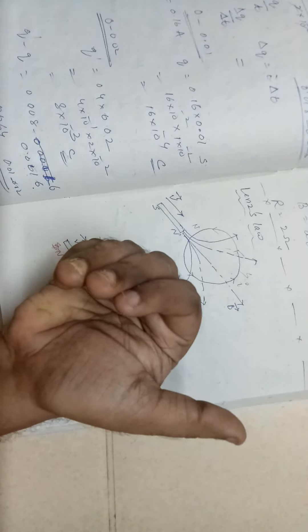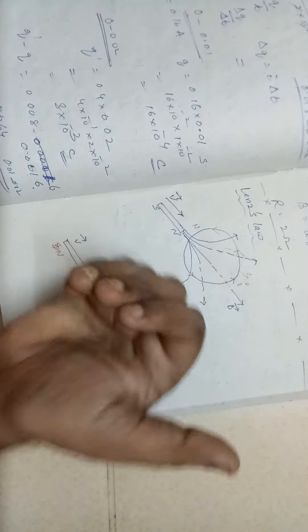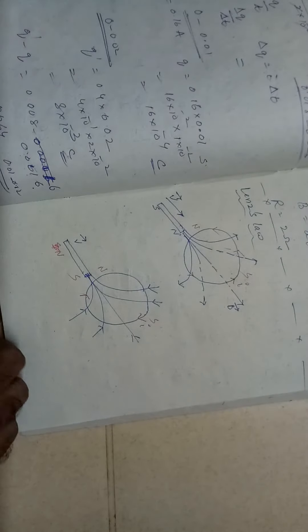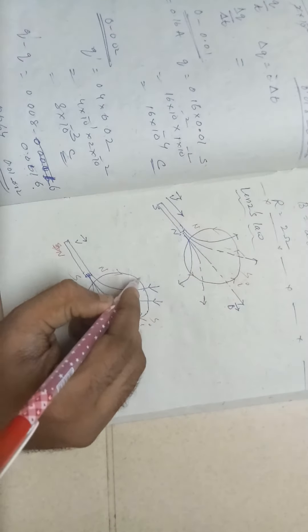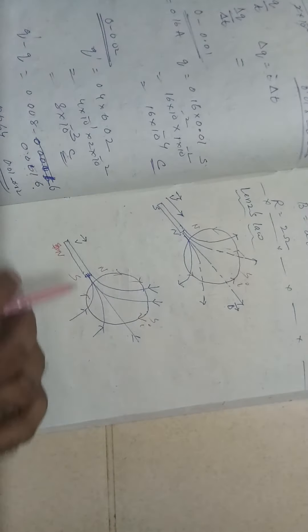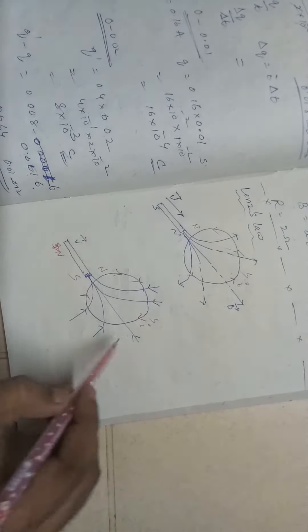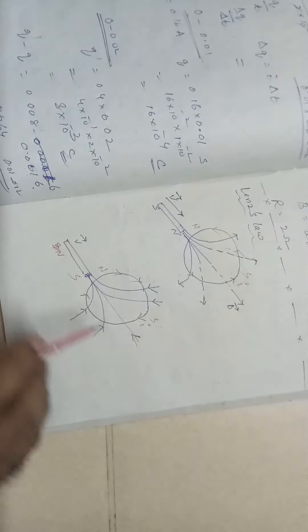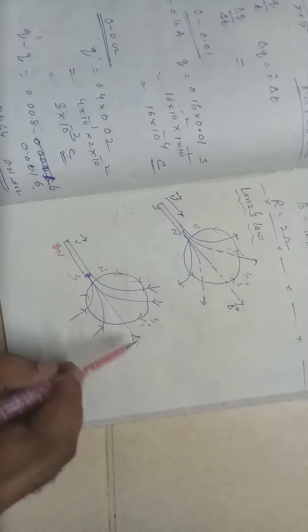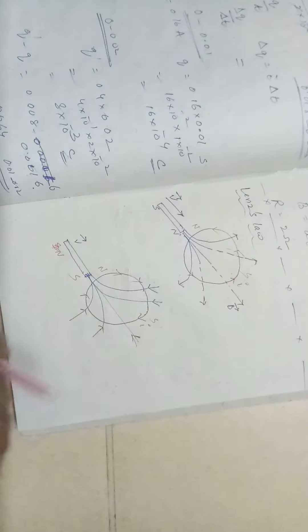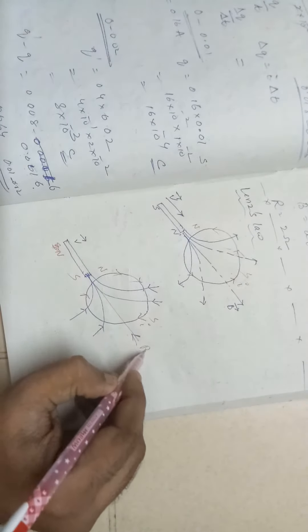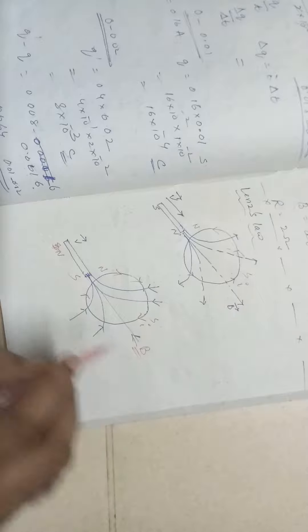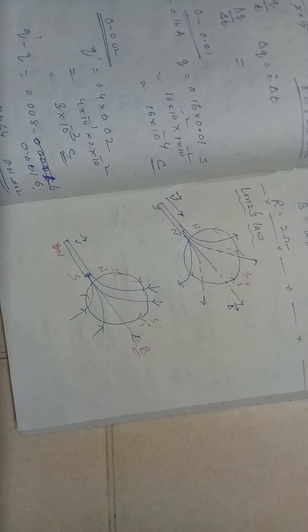You can see the fingers — they are coming in the clockwise direction. So this movement is clockwise. In both situations, you have to put the thumb in such a way that it is opposing the magnetic field.